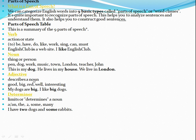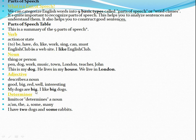Adjective. It describes a noun — it adds to the meaning of a noun, telling us detail about a noun: whether it is good, big, what color it is, or whether it is interesting. For example: 'My dogs are big' — dog is a noun modified by the adjective 'big'. 'I like big dogs.'